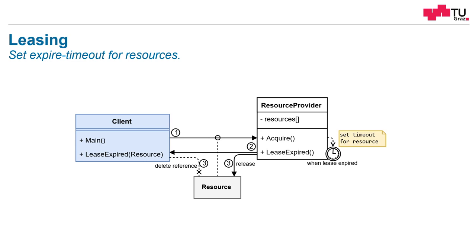How does this work? We, as a client, need some resources, so we need to acquire them. We have a resource provider, and this resource provider gives us the resource. We call the acquire method, but the resource provider in the background sets a timeout for this resource. And as soon as this timeout is over, the resource will be deleted or released again.